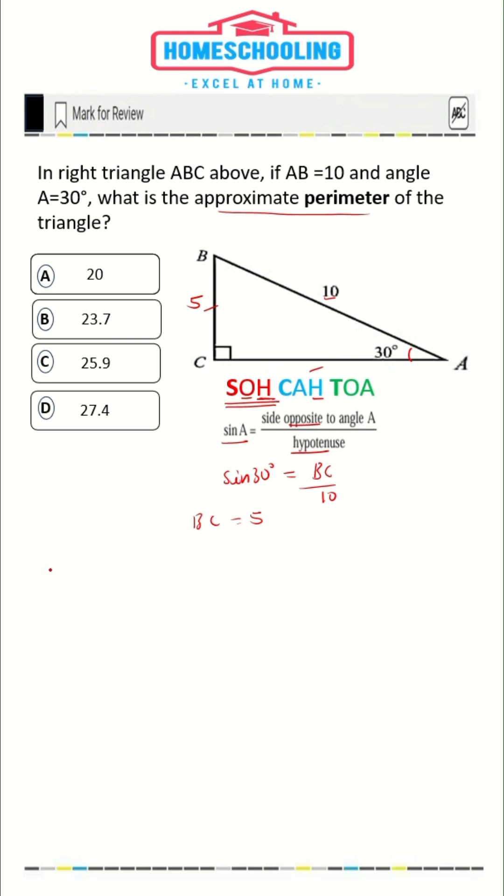To find AC value, we'll use the Pythagorean theorem. In Pythagoras theorem, the square of the hypotenuse AB is equal to the sum of the squares of the other two sides, BC squared plus AC squared.